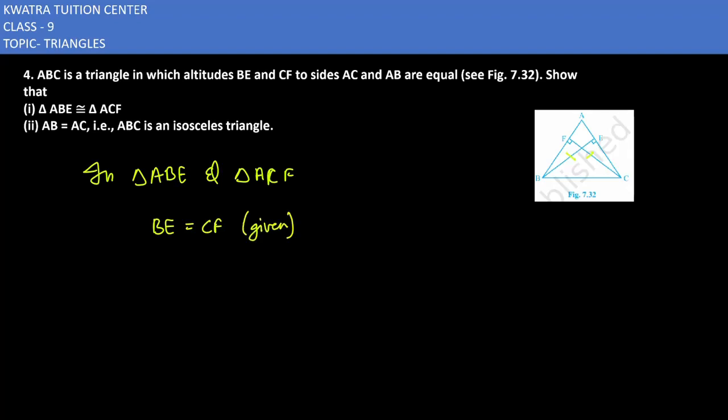Second thing is that you have to take a common angle. What is common in this case is angle A. If you look at it, angle A is the part of the two triangles. This is common.